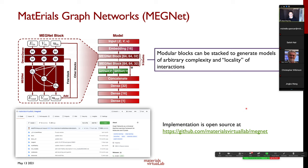In the first update step, atoms connected to a bond flow information to that bond along with global state information, updating the bond vector. You do the same for atoms and for the global state. This sequence of three steps forms a Materials Graph Network block. These blocks are modular and can be stacked to generate models of arbitrary complexity and locality. A property requiring long-range interactions needs more blocks; a simple property may need only one.